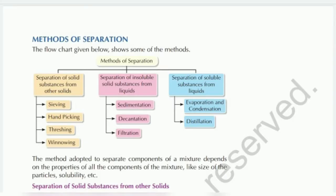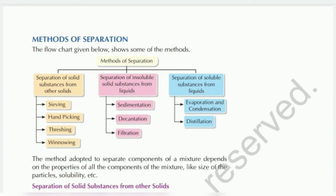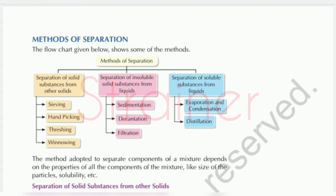So two methods as examples: one is hand-picking. Second one is using a strainer — tea powder with tea is separated. I will show you a flow chart, and in this flow chart each and every method we are going to learn.